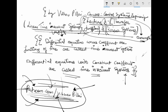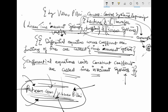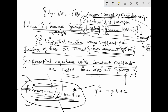Differential equations whose coefficients are functions of time are called time varying systems. Each and every system can be modeled using a differential equation, which will be covered in subsequent lectures. So if there is a differential equation like C₀y'' + C₁y' + C₂y = 0 where the constants are functions of time, this is called a time varying system.